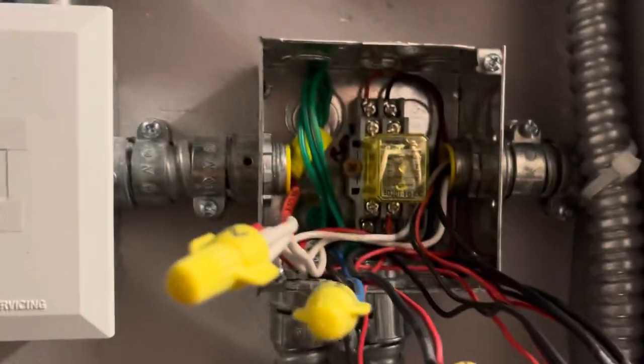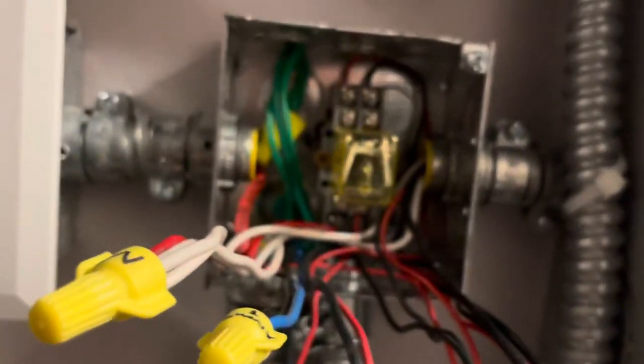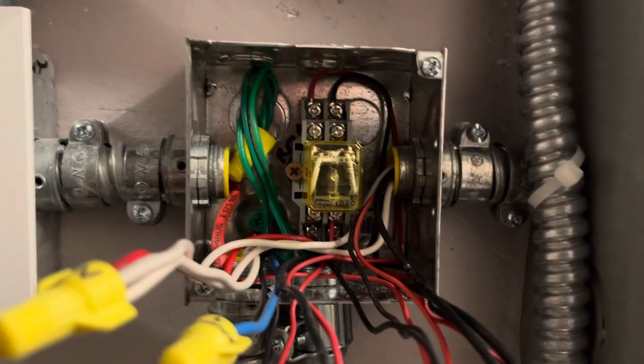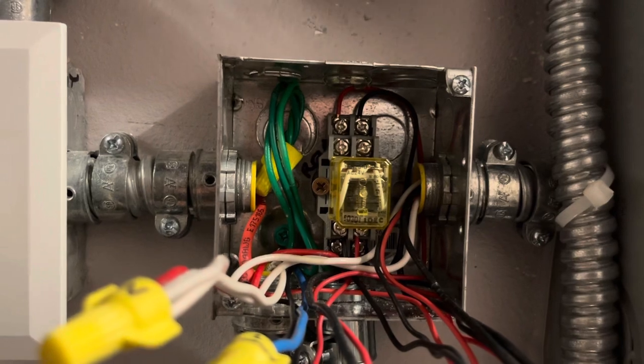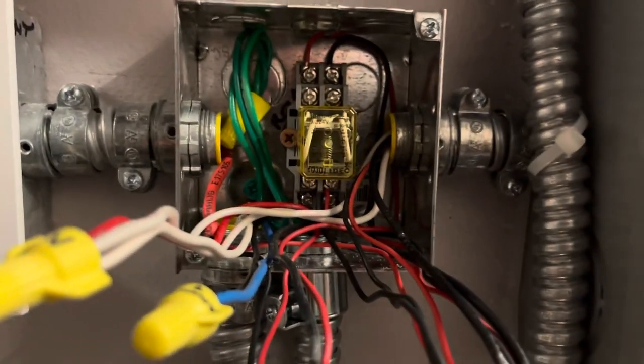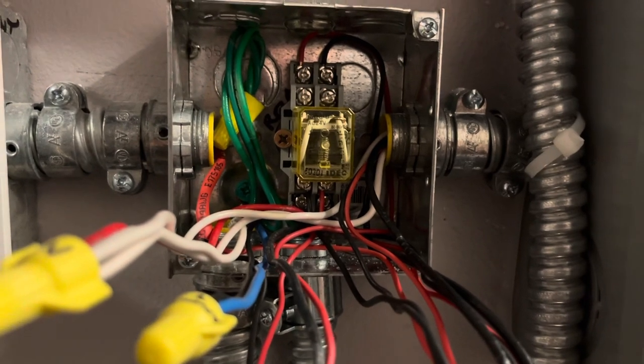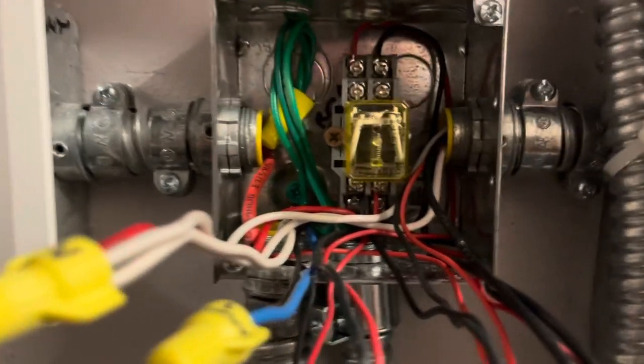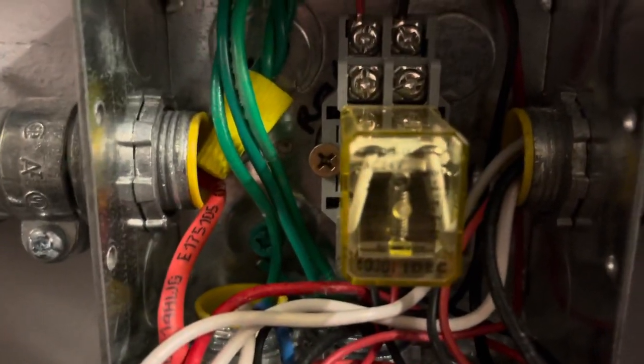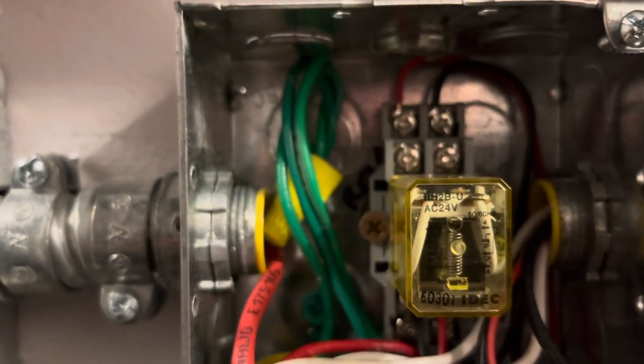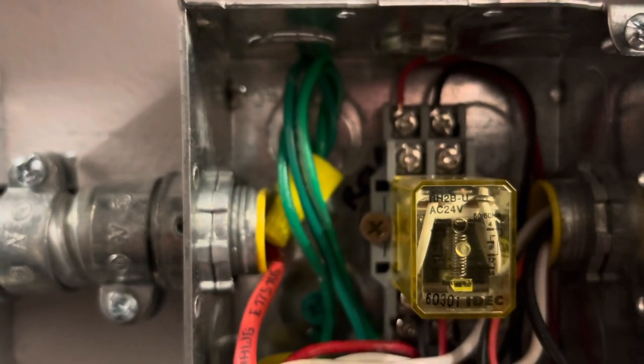So that is my little tutorial on how to do an elevator shunt with a 24 volt relay. Thank you guys for watching. Once again, my name is John Spear with Warhammer Electric. Please like and subscribe, and if you have any questions, feel free to let me know. The model I used on this particular deal is going to be a RHB2-U AC24B.